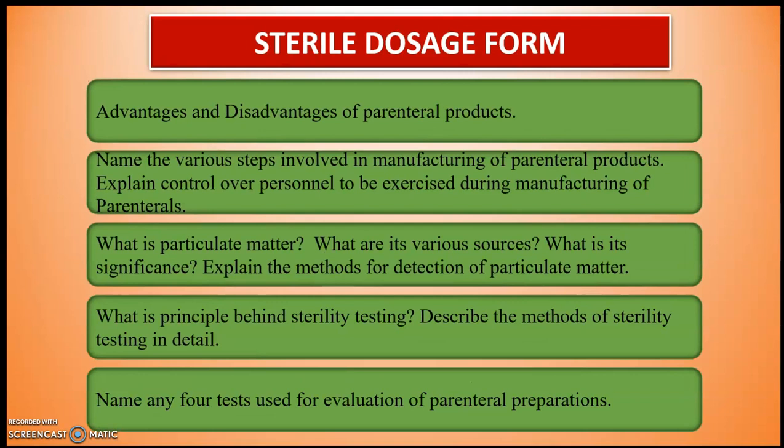The next chapter is sterile dosage forms. In this chapter, the important questions from the exam point of view are: the advantages and disadvantages of parenteral products; name the various steps involved in manufacturing of parenteral products; explain control over personnel to be exercised during manufacturing of parenterals. The next important question is what is particulate matter — what are its various sources, what is its significance, and explain the methods for detection of particulate matter.